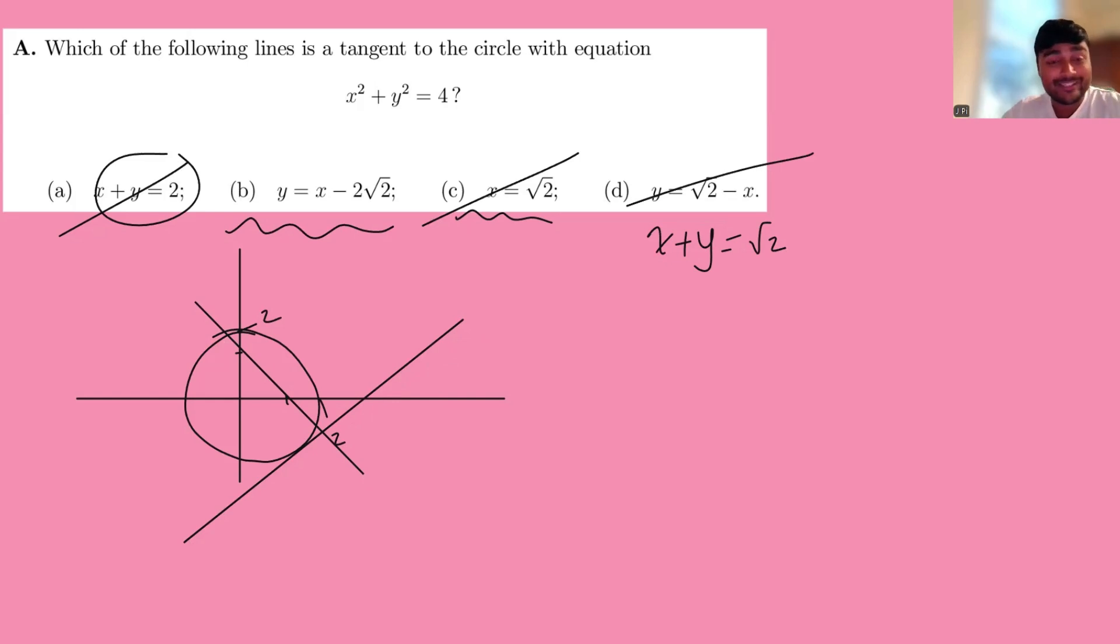And in fact, they've been quite nice here in that the only option that could plausibly work, or there's only one option that could plausibly work. These three options, as I illustrated, are really easy to eliminate.